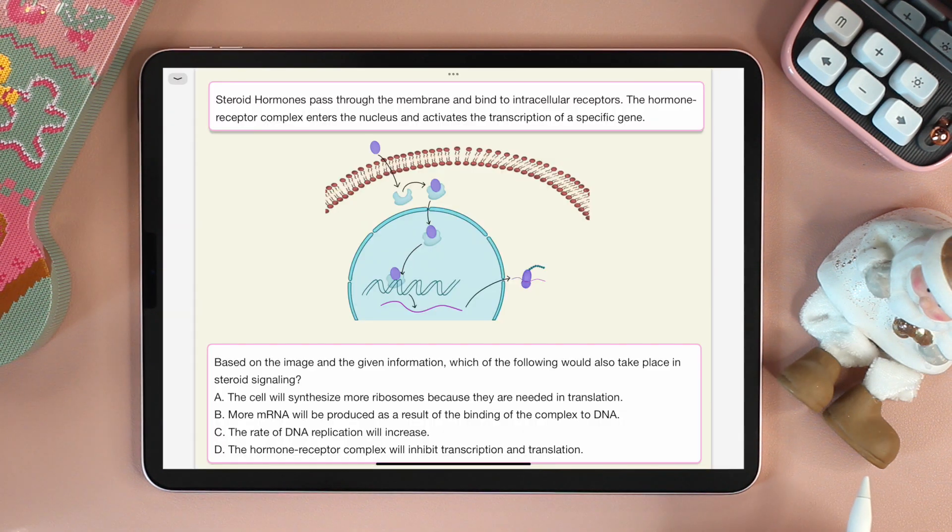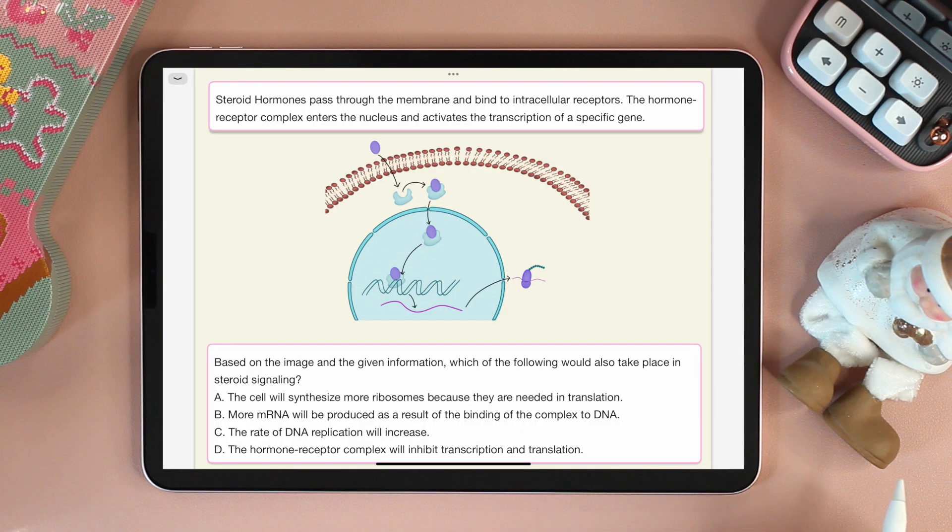Now let's answer the question of the day. Steroid hormones pass through the membrane and bind to intracellular receptors. The hormone receptor complex enters the nucleus and activates the transcription of a specific gene.